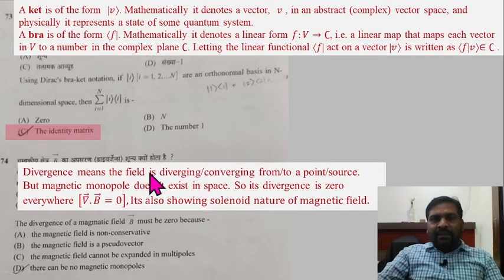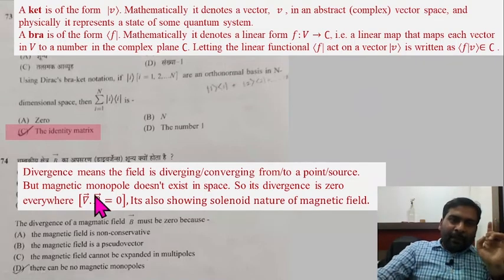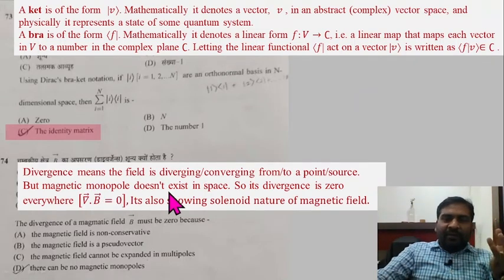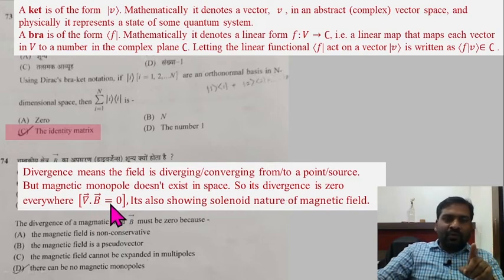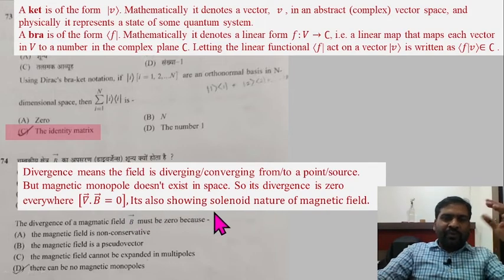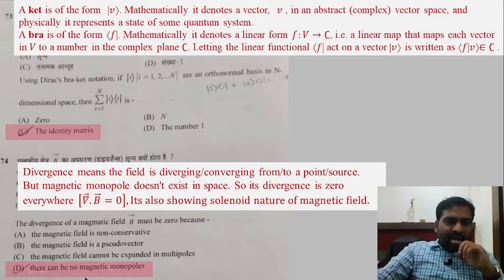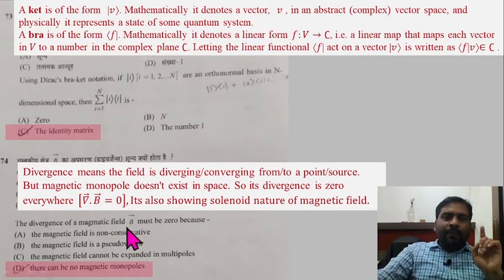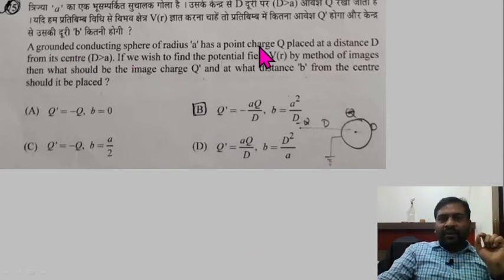Question 74: The divergence of a magnetic field must be zero because magnetic monopoles do not exist in space. In a magnet, there are always two poles that form a complete loop. So the divergence of B is zero everywhere: ∇·B = 0. This also shows the solenoidal nature of the magnetic field — sometimes a question asks which equation shows solenoidal behavior, and the answer is ∇·B = 0. There can be no magnetic monopoles, which is why the divergence of B must be zero.